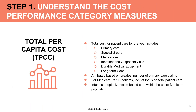Total Per Capita Cost covers every single claim received for a patient — all inpatient, outpatient, durable medical equipment, medications, long-term care, home health care — everything CMS receives a claim for. Attribution is based on the greatest number of primary care claims, which has been refined for 2020. CMS's goal is to get doctors to focus on total patient care and optimize value-based care within Medicare, carrying that approach from Medicare Advantage and ACO programs into the MIPS population.